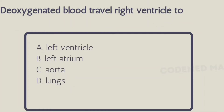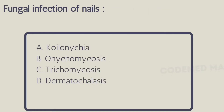Next question: deoxygenated blood travels from the right ventricle to — Option A: left ventricle, Option B: left atrium, Option C: aorta, Option D: lungs. The right answer is Option D, lungs. Next question: fungal infection of nails is — Option A: koilonychia, Option B: onychomycosis, Option C: trichomycosis, Option D: dermatochalasis.